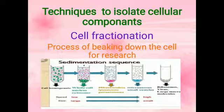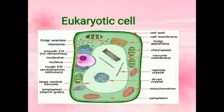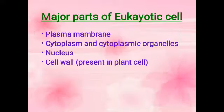Now moving to another topic: eukaryotic cells. Students, recall your memory. In our last lecture, we learned the difference between eukaryotic and prokaryotic cells in detail. Now in this lecture, we will discuss eukaryotic cells and its components. A typical eukaryotic cell contains three major parts, but a fourth component, cell wall, is only found in plant cells — it is absent in animal cells. The first is plasma membrane, second is cytoplasm with its organelles, third is nucleus, and the fourth is cell wall, present only in plant cells.